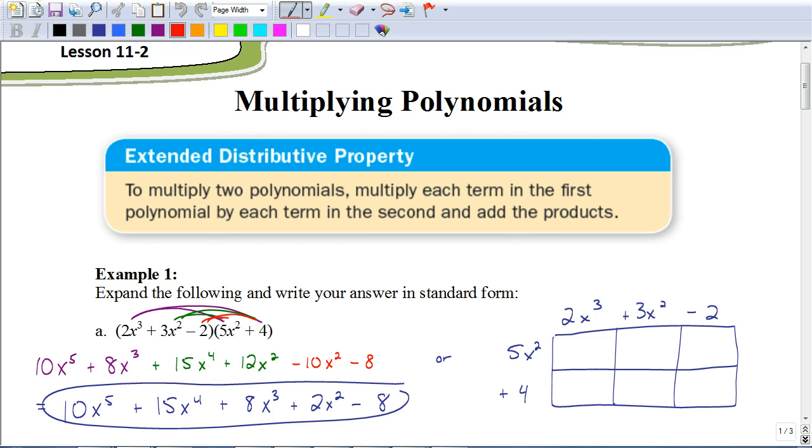The extended distributive property just means that if I have two polynomials being multiplied by each other, we take each term from one polynomial and multiply it times each of the terms in the other polynomial. So, if you notice here with the 2x cubed, we're multiplying that times the 5x squared and the 4. Then we take the 3x squared, multiply that times the 5x squared, and then times the 4. And finally, we would take that negative 2 times the 5x squared and times the 4.